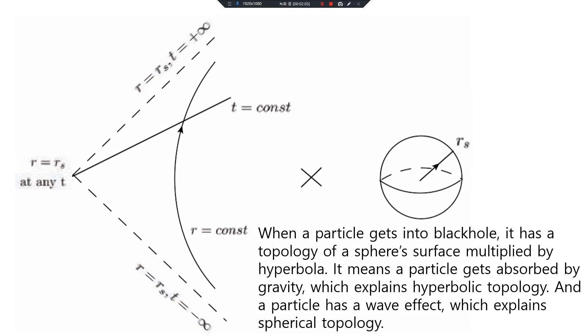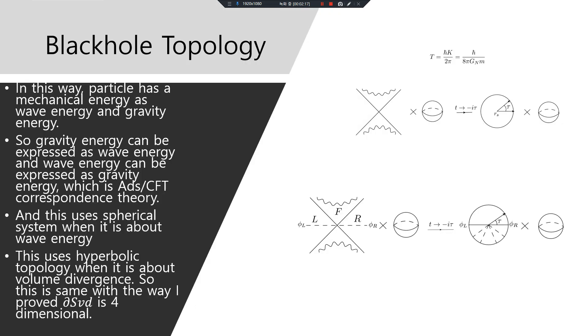When a particle gets into a black hole, it has a topology of sphere surface multiplied by hyperbola. It means a particle gets absorbed by gravity which explains hyperbolic topology, and a particle has a wave effect which explains spherical topology.